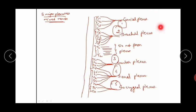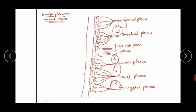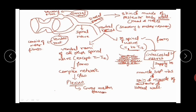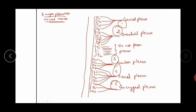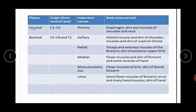In total, our body has five plexuses. The thoracic nerves do not form a plexus because they form the intercostal nerves supplying the intercostal muscles between the ribs. To summarize: cervical plexus C1–C4, brachial plexus C5–T1, thoracic nerves T2–T12 (no plexus), lumbar plexus L1–L4, sacral plexus L4–S4, and coccygeal plexus S4–Co.